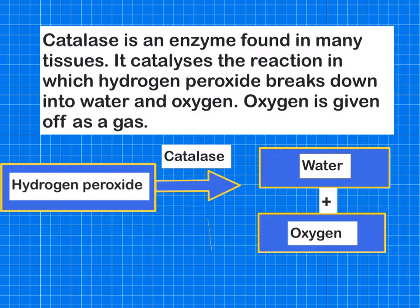So a bit of background first, we're going to look at the effect of substrate concentration on catalase. Catalase is an enzyme found in many tissues both animal and plant and it catalyzes the reaction of hydrogen peroxide which is produced by your cells. It breaks it down conveniently into water and oxygen. Oxygen is given off as a gas so that's something that could be measured in this experiment.